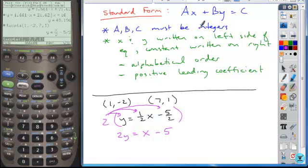Next we go to x and y being on the same side. We want them in alphabetical order, and we want it to have a positive leading coefficient. As we do this, you can do one of two things. Since the x is already positive, we can leave the x on the right side.